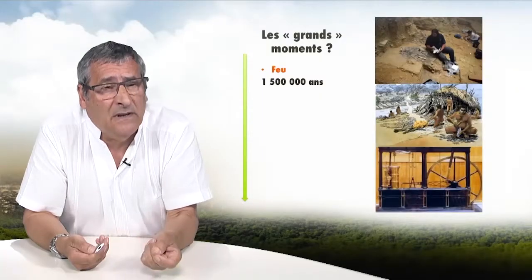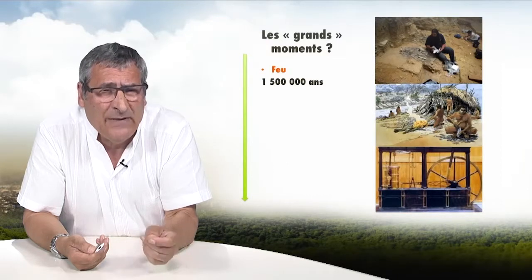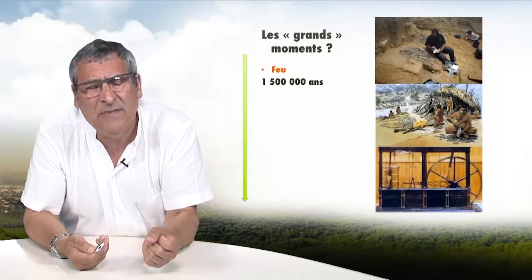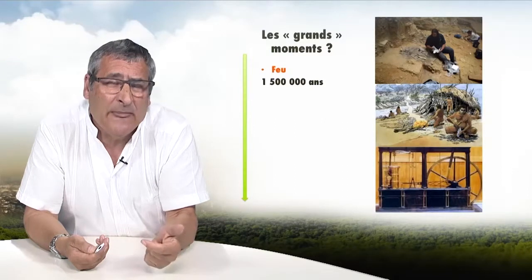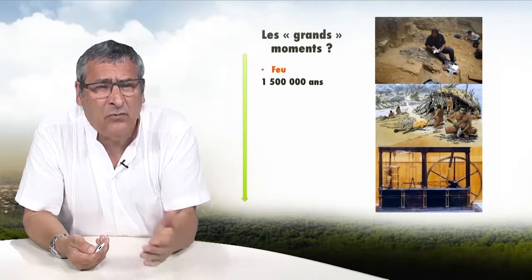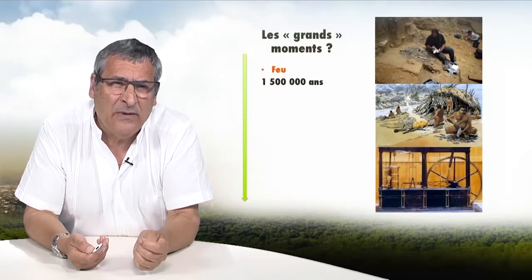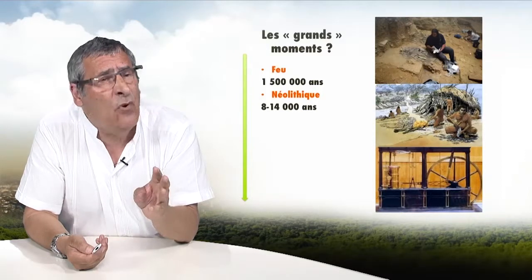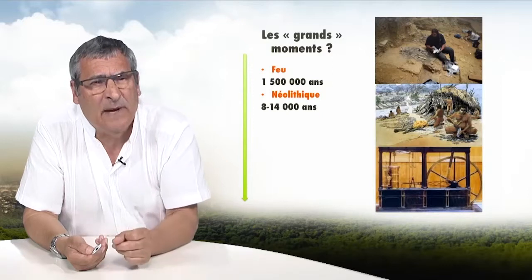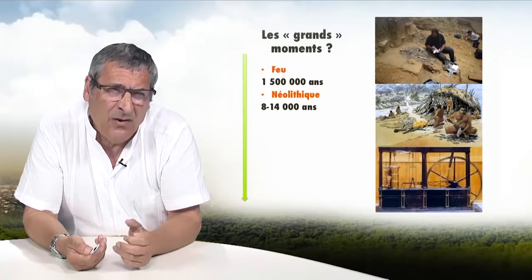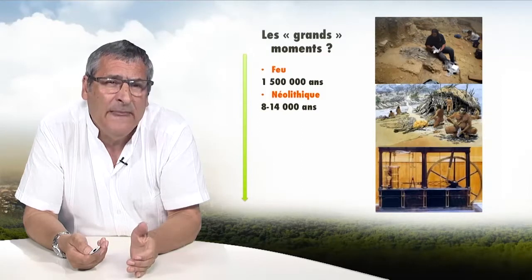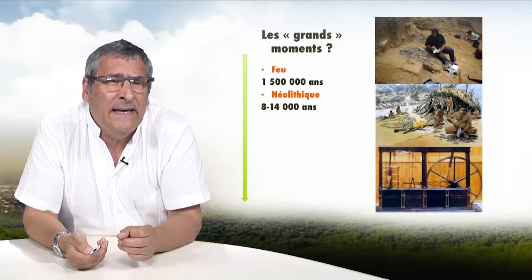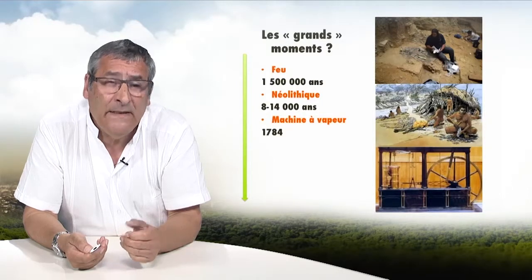When did humans start to separate from nature? Domestication of fire about 1.5 million years ago allowed humans to keep large predators at bay. It allowed them to leave Africa, to harden their tools and weapons, and later to cook meat. When you eat meat killed by lions 10 days ago, it's better to cook it. The second phase is the Neolithic — only Homo sapiens remains on Earth. About 8,000 to 14,000 years ago: domestication of animals, and then agriculture.